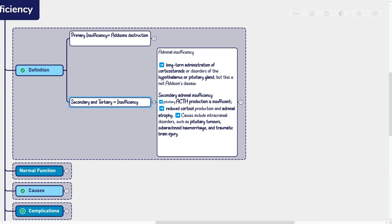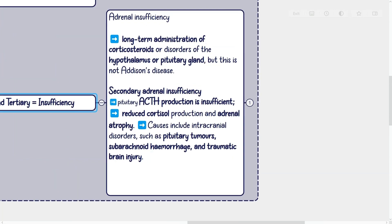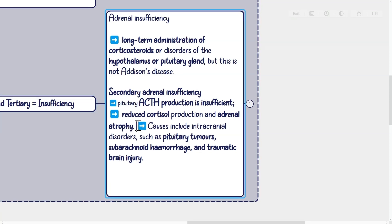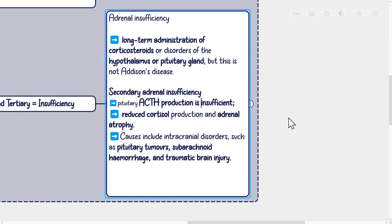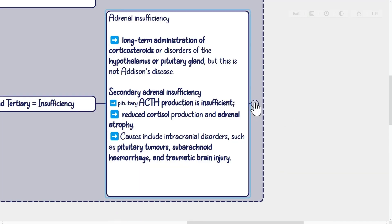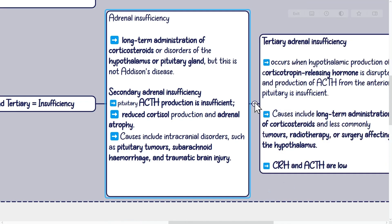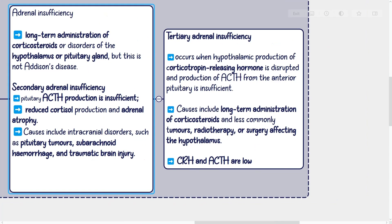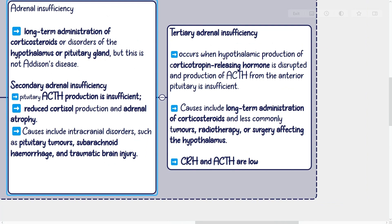Secondary and tertiary insufficiency: Adrenal insufficiency may also be caused by long-term administration of corticosteroids or disorders of the hypothalamus or pituitary gland, but this is not Addison's disease. Secondary adrenal insufficiency occurs when pituitary ACTH production is insufficient, leading to reduced cortisol production and adrenal atrophy. Causes include intracranial disorders such as pituitary tumors, subarachnoid hemorrhage, and traumatic brain injury. Tertiary adrenal insufficiency occurs when hypothalamic production of corticotropin-releasing hormone is disrupted and production of ACTH from the anterior pituitary is insufficient.